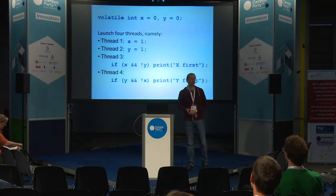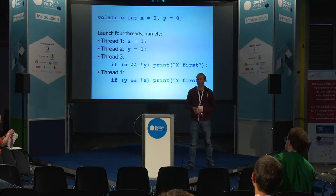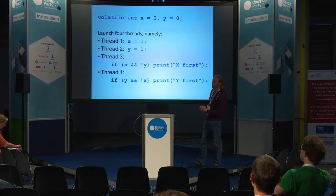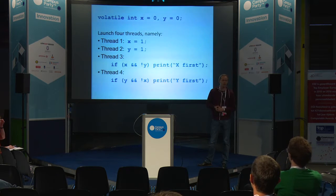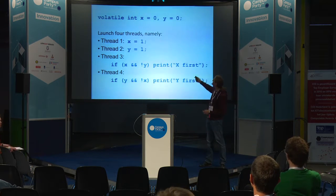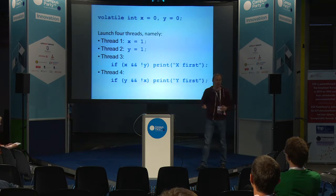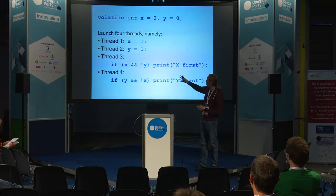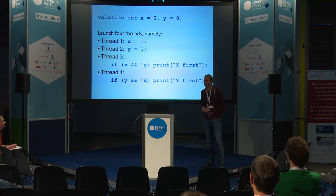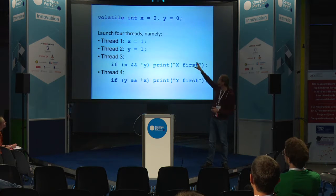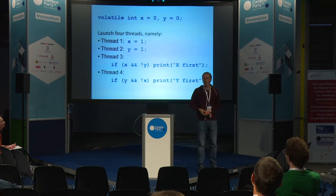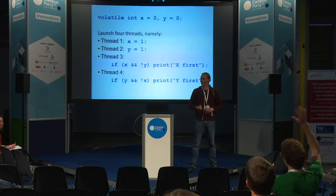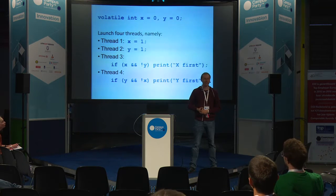It's hard to program a multi-core processor with parallelism. Let's throw some C code on the screen. We have four parallel threads of execution running on a quad-core. I initialized variables X and Y to zero; threads one and two set them to one, and threads three and four read them. Could both prints - X first and Y first - happen in one execution of this program? Six people think it could.